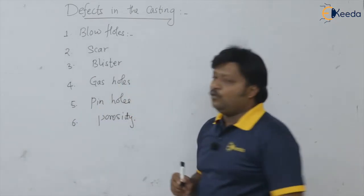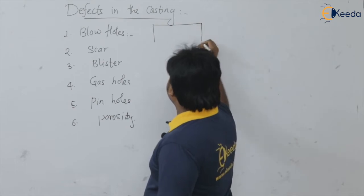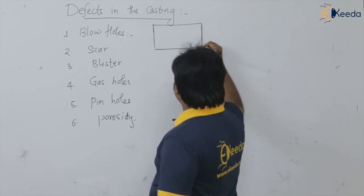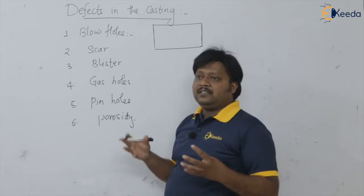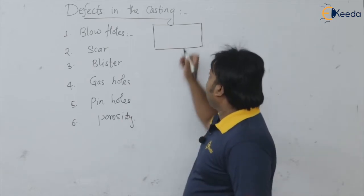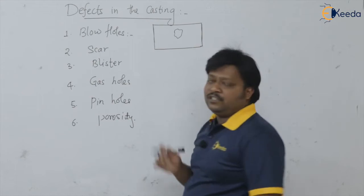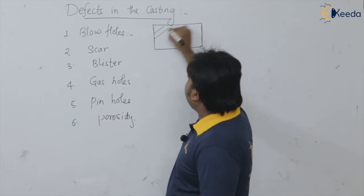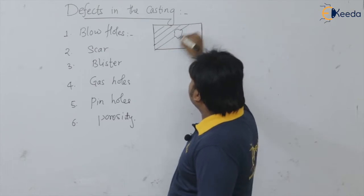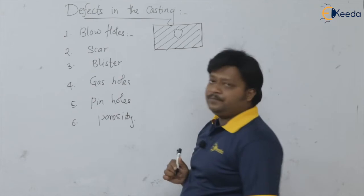If you look at the blow holes, it is nothing but the entrapment of the air into the molten metal. When the liquid is going to solidify, this bubble starts dispersing into the molten metal. And finally, there is a bubble-like presence of air into the casting, which is known as the blow hole.